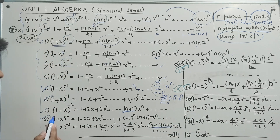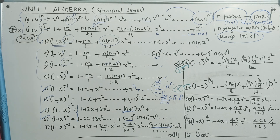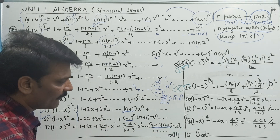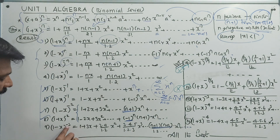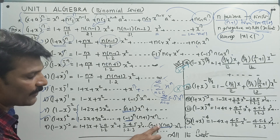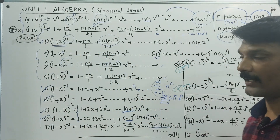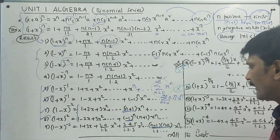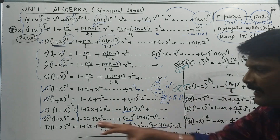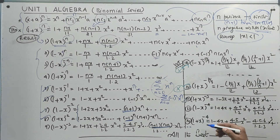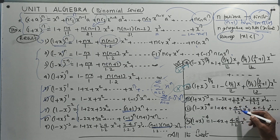The general term for 1 minus x whole power minus 2 uses the alternate sign: minus 1 whole power n. For 1 minus x whole power minus 3: 1 plus x whole power minus 4 gives same sign, formula being 1 plus 4x plus 4 into 5 upon 1 into 2 into x squared plus 4 into 5 into 6 upon 1 into 2 into 3, and the general terms are n plus 1, n plus 2, n plus 3.